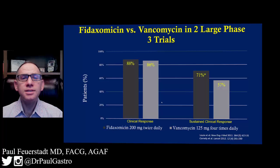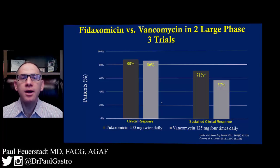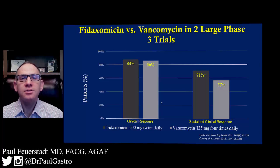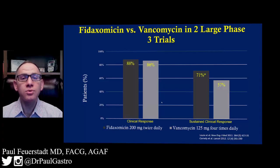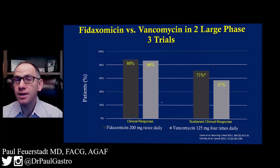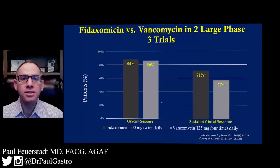Within these studies, vancomycin and Fidaxamycin were compared for initial treatment response with the bar graph shown on the left. We see that Fidaxamycin had an initial response rate of 88% versus 86% for the vancomycin group.